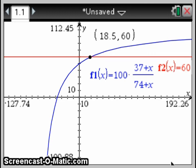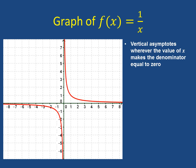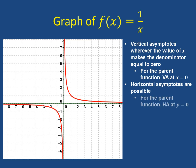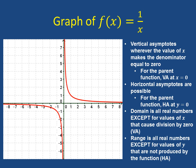So let's look at the graph of the parent function f of x equals 1 over x. We see that we have a vertical asymptote wherever the value of x makes the denominator equal to 0. For the parent function, this occurs at x equals 0. We also have the possibility of horizontal asymptotes. For the parent function, this occurs at y equals 0. The domain will be all real numbers except for any value of x that causes division by 0, where the vertical asymptotes are. And the range is all real numbers except for values of y that are not produced by the function. These would be the horizontal asymptotes.